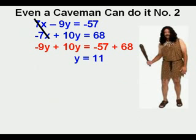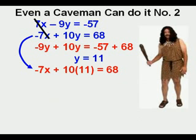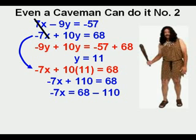Now that he knows what y is, he can bring down one of the equations and substitute 11 for y. So he brings down negative 7x plus 10y equals 68, replacing y with 11. So he has negative 7x plus 10 times 11 equals 68. Simplifying, we have negative 7x plus 110 equals 68. He moves the 110 to the right, and that makes it negative 110 on the right side. Simplifying, he has negative 7x equals negative 42. Dividing both sides by negative 7, he finds that x equals 6.